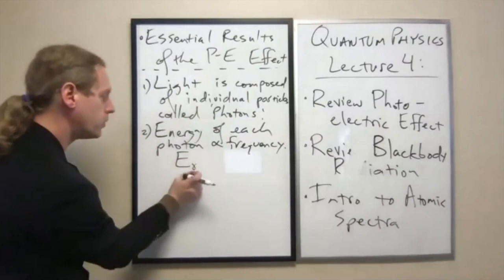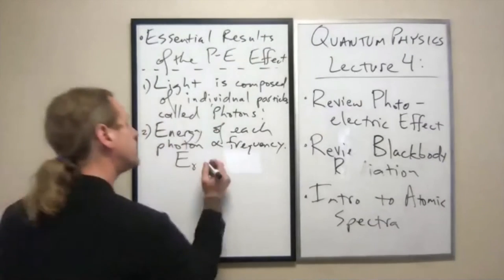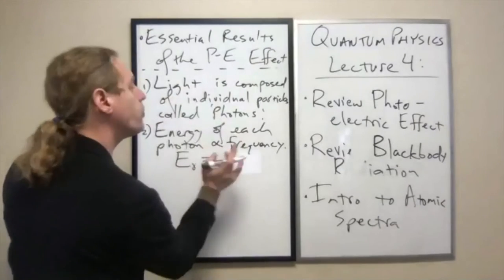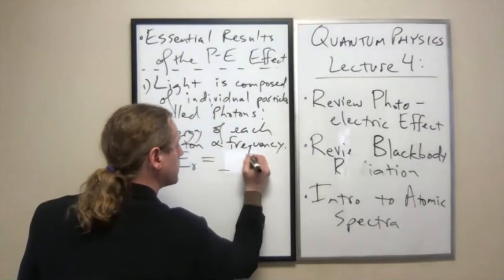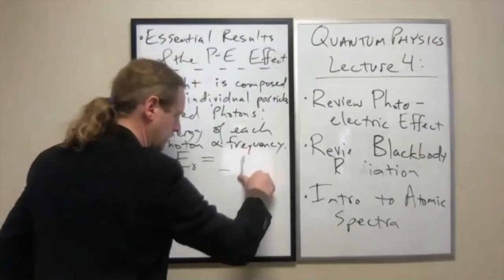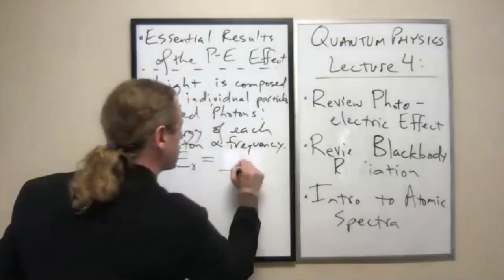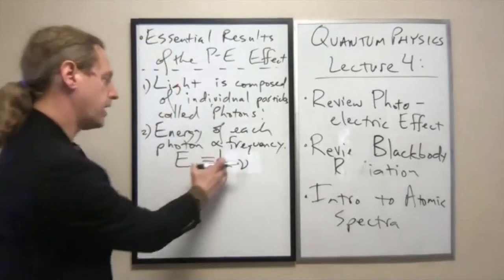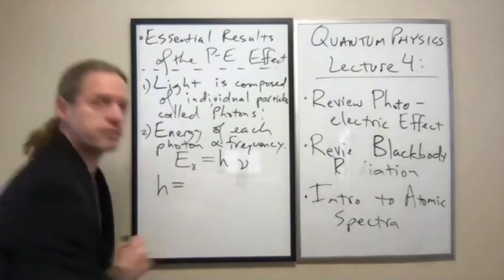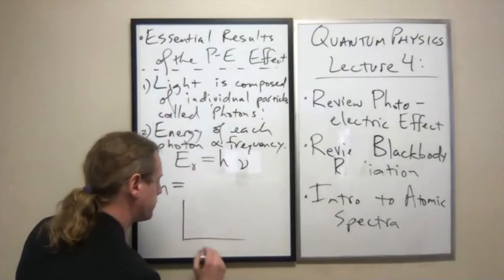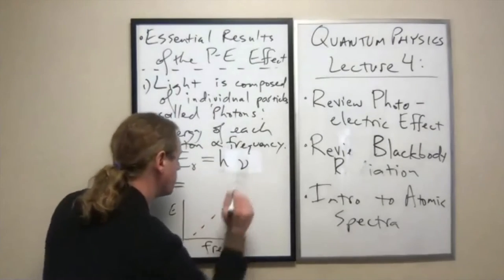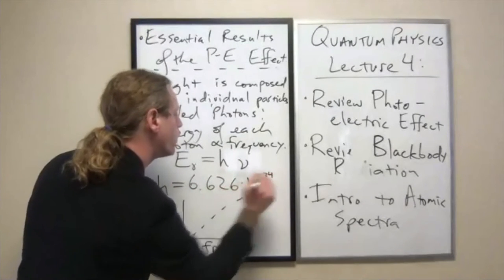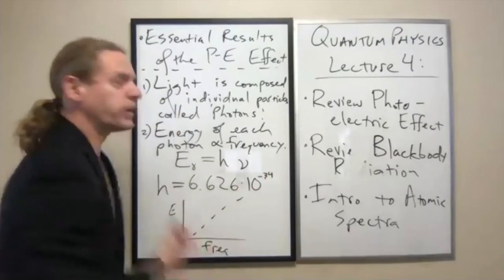You can write this as an equation: E sub gamma, where gamma typically refers to a photon, equals some multiplying constant times the frequency. We typically use the Greek letter nu for frequency. When you measure the slope of that graph, we have some constant h, and the value of h comes from a graph of energy versus frequency. It has a magnitude of 6.626 times 10 to the minus 34, and we can figure out exactly what units it must have.